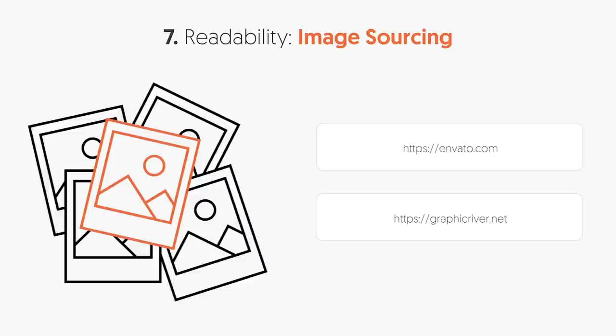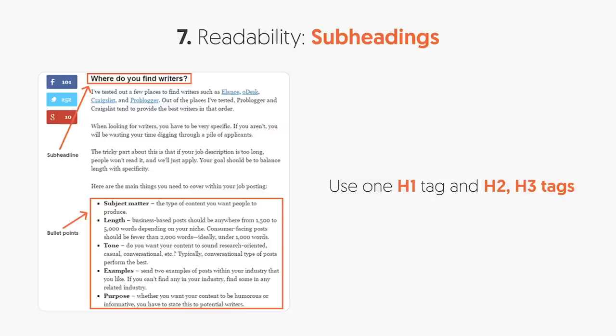Now, subheadings. Think of your main title on the page as an H1, but then you have subheadings — like chapters in a book. Those use H2 or H3 heading tags. If you're not sure if you're using them correctly, go to Ubersuggest, type in your URL, click Site Audit on the left navigation, and it'll analyze your headings and all your code and tell you what's wrong.